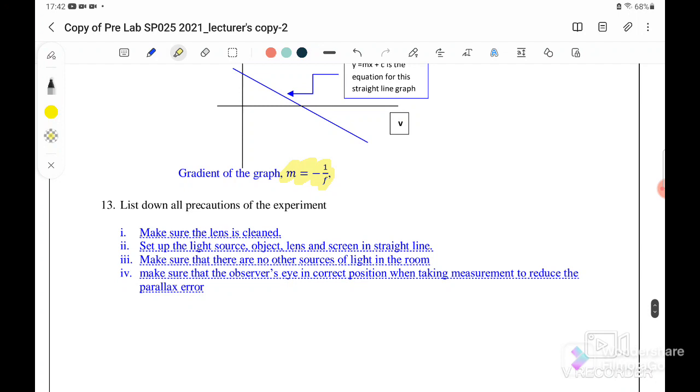Next, list down all precautions of the experiment. Number one: make sure the lens is clean. Set up the light source, object, lens and screen in a straight line. Make sure that there are no other sources of light in the room, make sure we do it in a dark room, so no other light source.